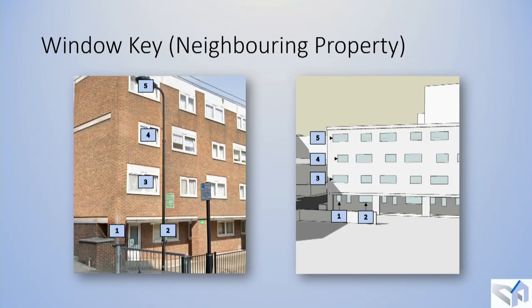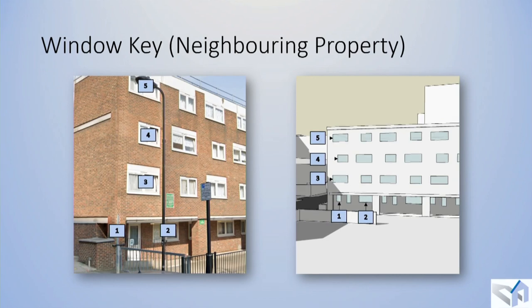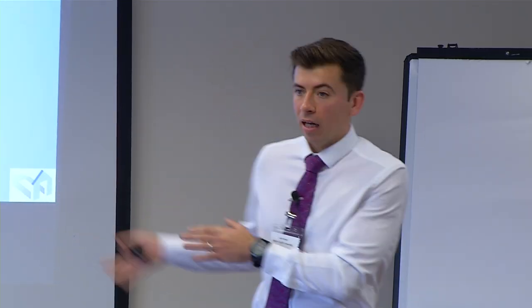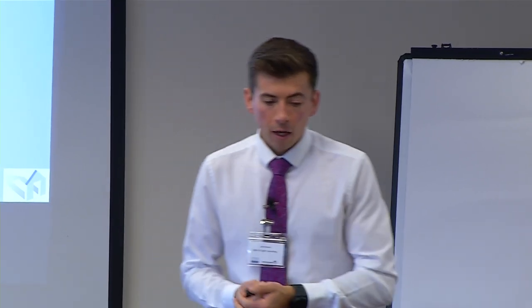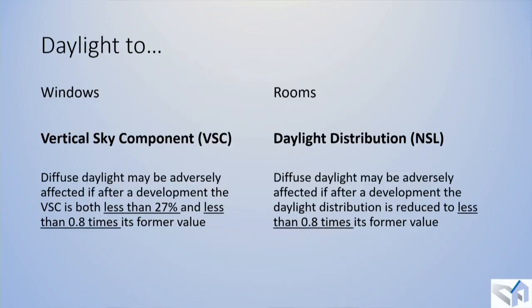In our case study, we have windows 1 through 5 of the neighbouring property. The window between numbers 1 and 2 almost certainly serves a hallway, so it's left out of the assessment — local authorities are only concerned with daylight and sunlight to habitable room windows such as kitchens, living rooms, and bedrooms, not non-habitable spaces like hallways, bathrooms, or utility spaces. For today, we're focusing on the impact on this first floor window number 3.